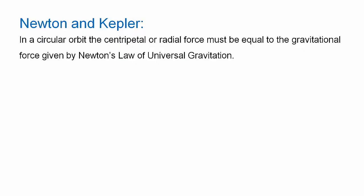In a circular orbit, the centripetal or radial force must be equal to the gravitational force given by Newton's law of universal gravitation. The equation for the centripetal force is F equals mv squared on R, and the equation for the gravitational force from Newton's law of universal gravitation is F equals capital G little m big M on R squared.